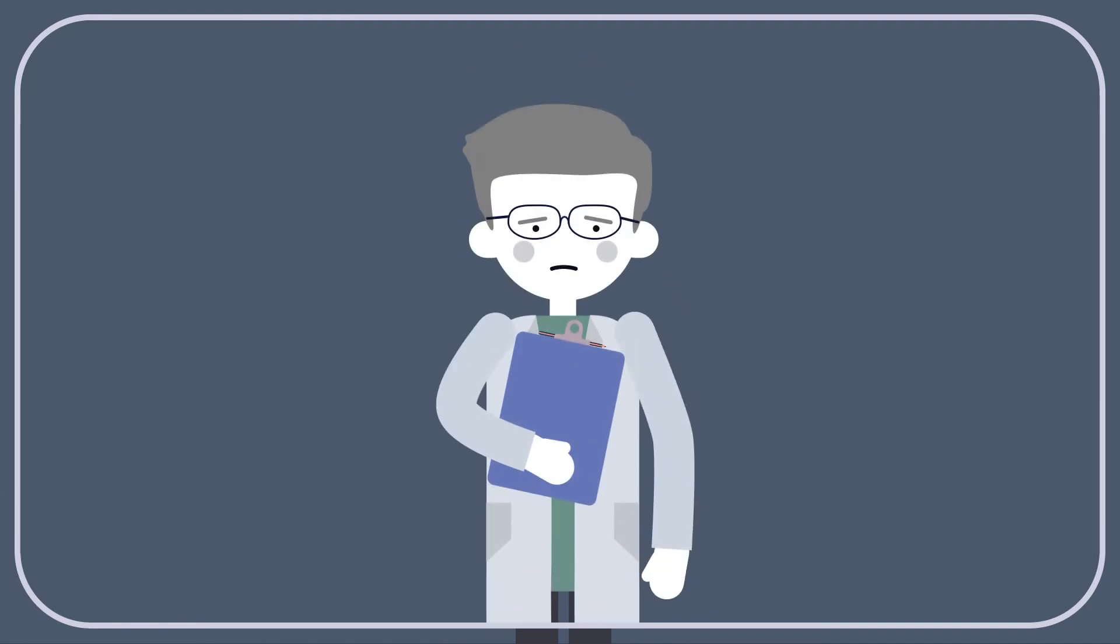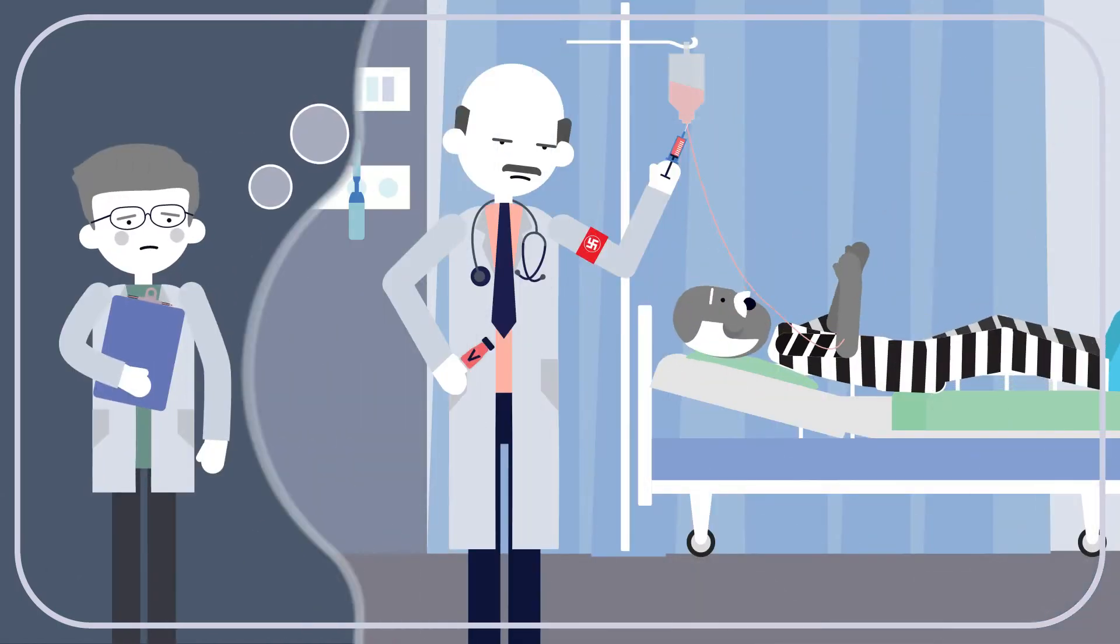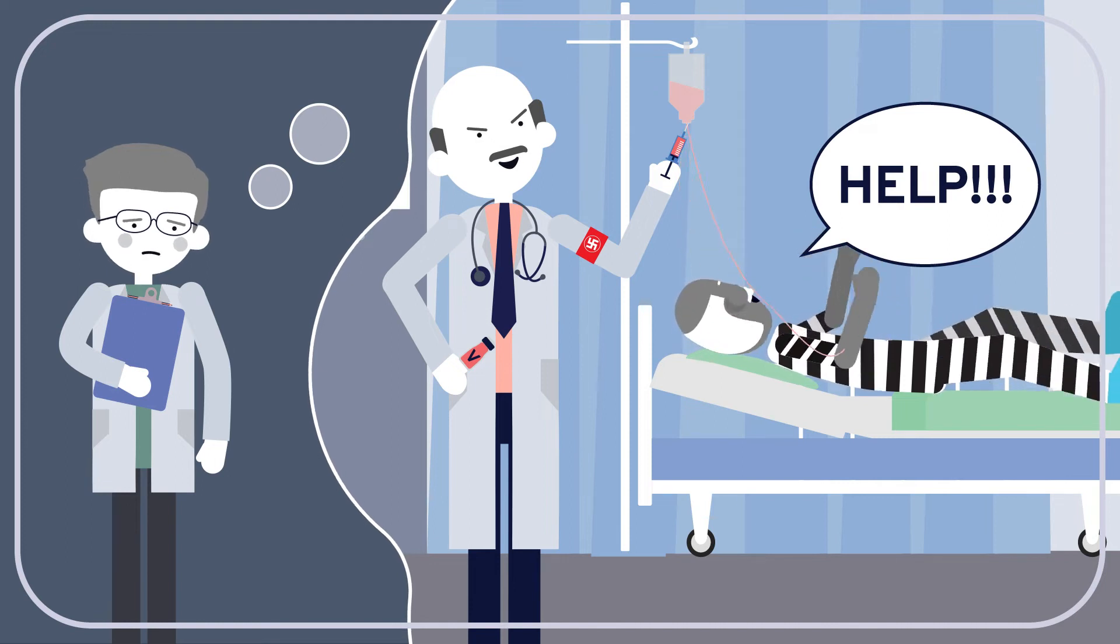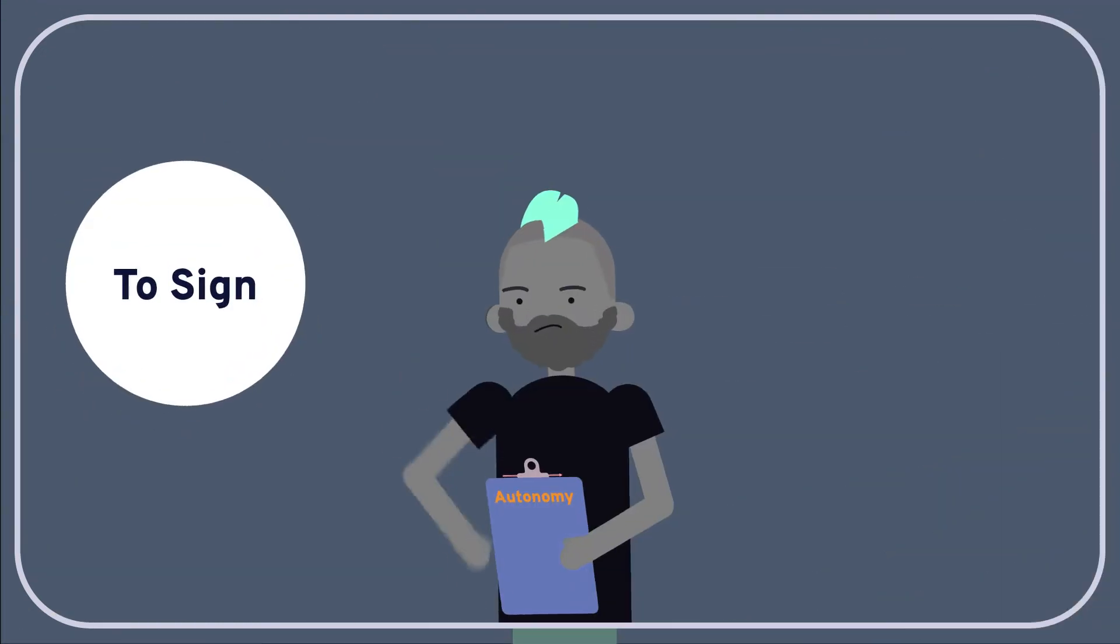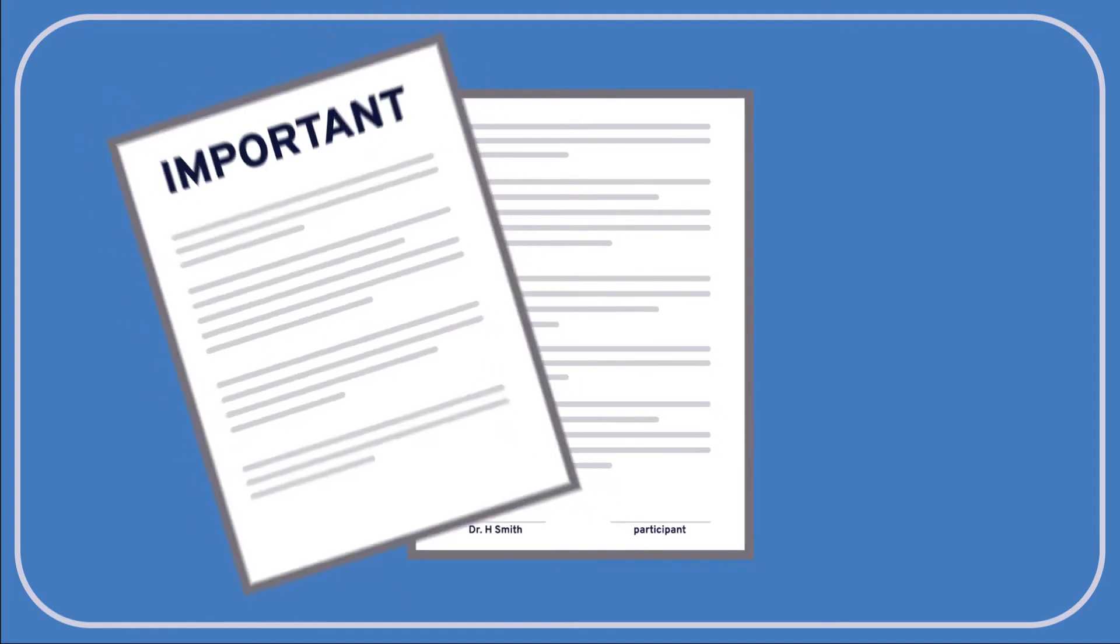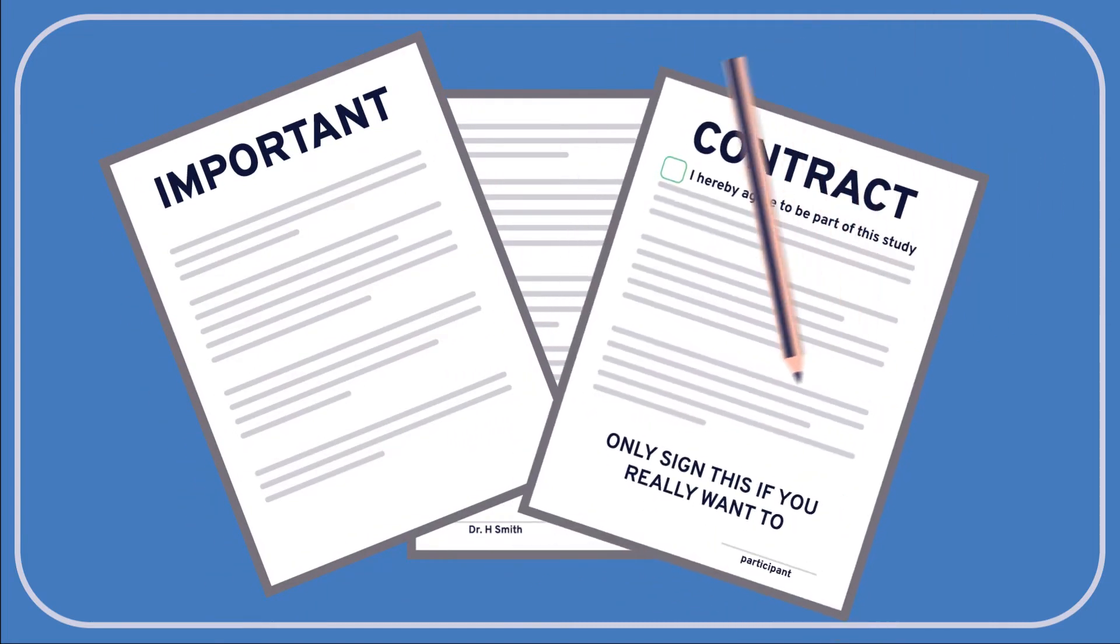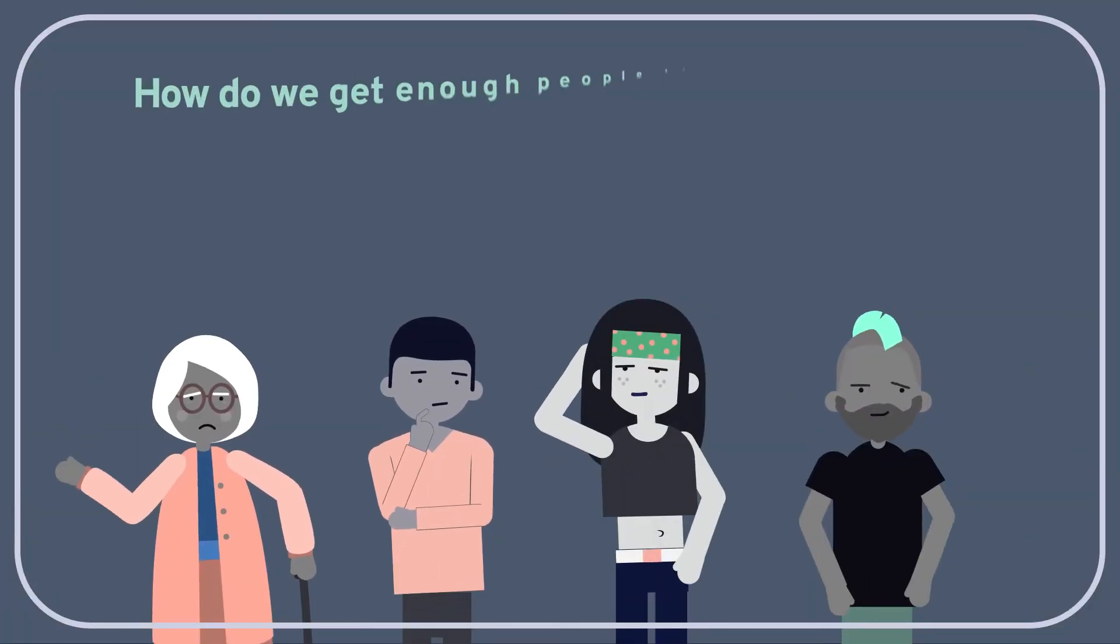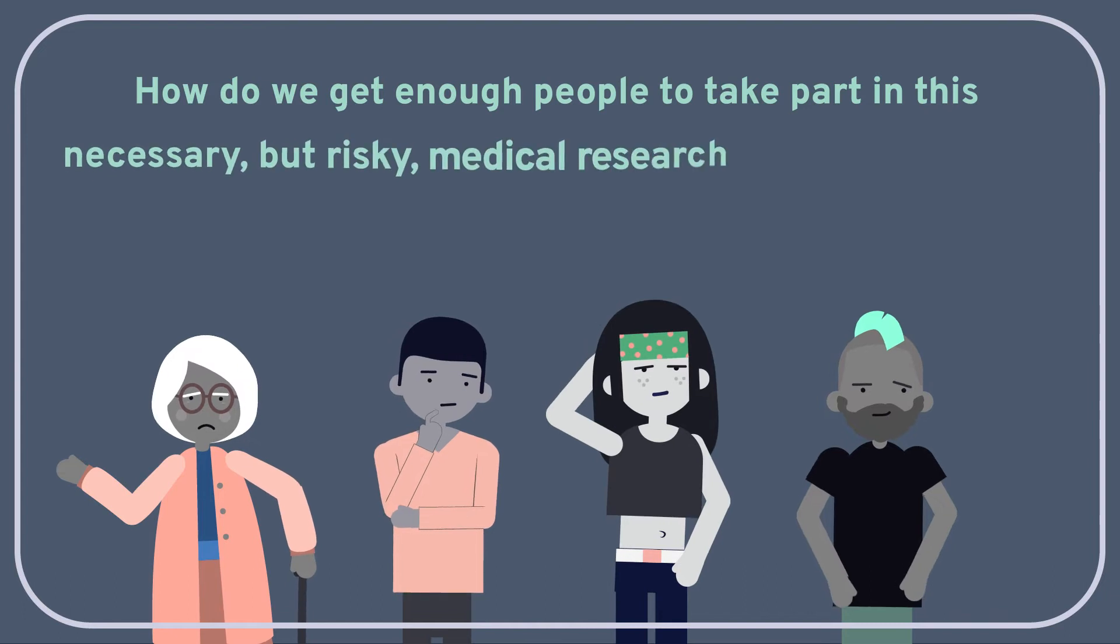We certainly wouldn't want to coerce people against their wishes, like those Nazi scientists who conducted experiments on their unwilling prisoners. One of the key principles of modern research ethics is that researchers must respect the autonomy of participants, the participants' capacity to make free and informed decisions for themselves about whether to take part in a given study. The question, then, is how do we get enough people to take part in the experimental research voluntarily?